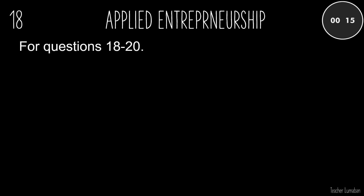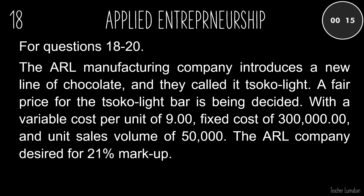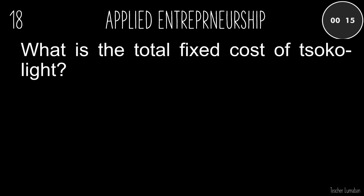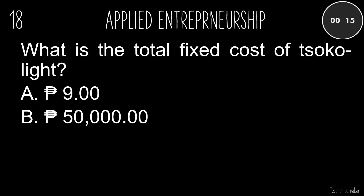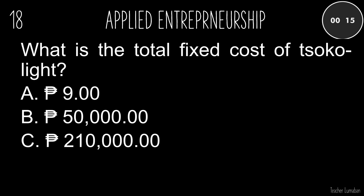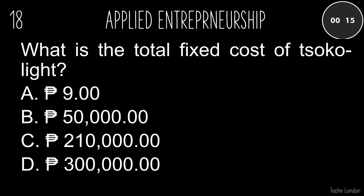For questions 18 to 20: The ARL manufacturing company introduces a new line of chocolate called CicoLite. A fair price for the CicoLite bar is being decided, with a variable cost per unit of 9.00 pesos, fixed cost of 300,000.00 pesos, and unit sales volume of 50,000. The ARL company desired a 21% markup. What is the total fixed cost of CicoLite? A. 9.00 pesos. B. 50,000.00 pesos. C. 210,000.00 pesos. D. 300,000.00 pesos.